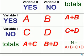The marginal areas represent the totals. For example, cell A plus B would equal the total who answered variable 1 yes.